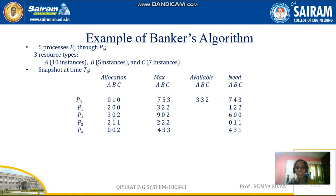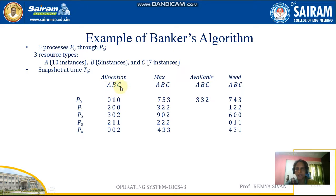Here is an example of Banker's algorithm. I have five processes: P0 to P4. There are three resource types named A, B, and C. The total available instances of A is 10, B is 5, and C is 7.